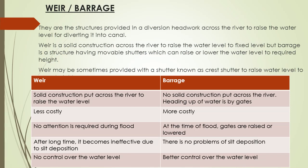Comparing weir and barrage: a weir is a solid construction put across the river to raise the water level, but in the case of a barrage, there is no solid construction across the river and heading up of water is done by shutters. A weir is less costly than a barrage. In a weir, no attention is required during the time of flood, but for a barrage, we need to raise or lower the shutters according to requirement. Silt deposition is a problem in the case of a weir, which makes it ineffective after long usage, but for a barrage there is no issue of silt deposition. In a weir, we have no control over the water level, while in a barrage we can increase or reduce the water level.